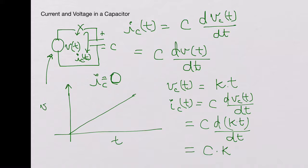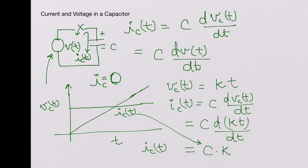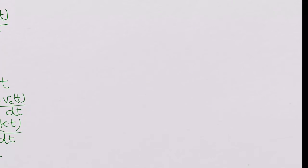So with VC of T increasing linearly with time, the current IC of T is nothing but C times K — a constant. So if there is a voltage that is linearly increasing with time, you get a constant current in the capacitor. Now let's look at it the other way, where you force a current into a capacitor.